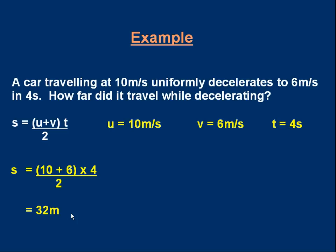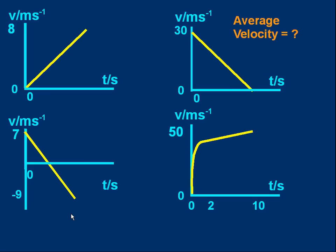Let's say a word or two about average velocity now. Here are four graphs. Can you look at each of those graphs and see if you can work out what the average velocity is for each graph? You may have to estimate it or you may be able to calculate it. See if you can come up with values for the average velocity for each of those. Pause now.